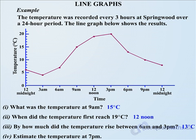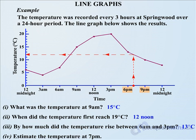Finally, we need to estimate the temperature at 7pm. We can see from our graph that 6pm and 9pm are the times that were recorded. We don't know exactly what happened between those times, but to estimate it, 7pm would be there. Measuring up and across, 12 degrees Celsius would be a good estimate for that temperature at that time.